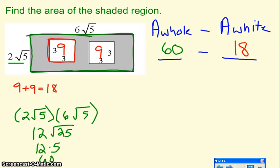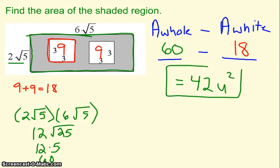So now, all we have left to do is combine our answers, 60 minus 18. Well, 60 and 18 are both constants, so they are like terms. So we can do the subtraction, and we get 42, and here is where we'll put our label on. Since it's area, it will be units squared.